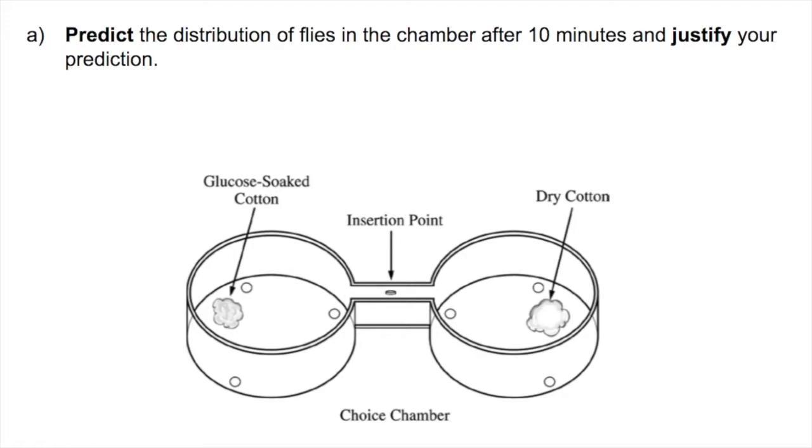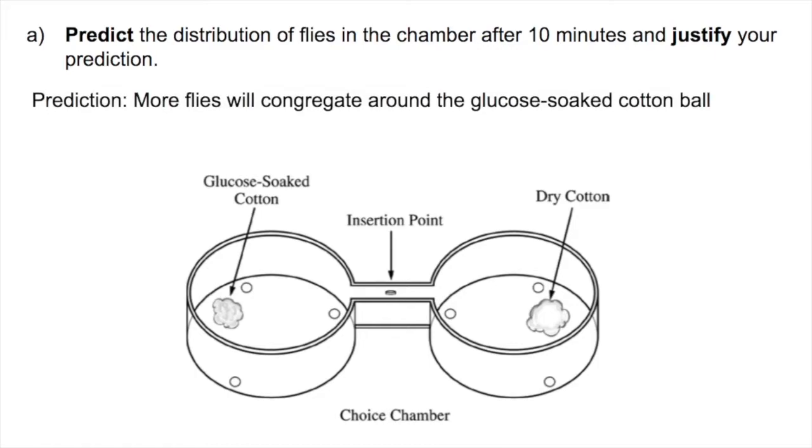If we have a cotton ball soaked with glucose and a cotton ball that's not soaked with anything, then the flies are very likely to go to the glucose soaked cotton because glucose is an energy source, it's sugar, it's something that they want, and the dry cotton has no advantage whatsoever. So we're going to predict that more flies are going to gravitate around the glucose soaked cotton ball because glucose is an energy source for the flies.